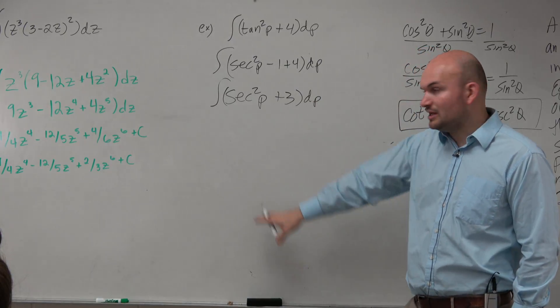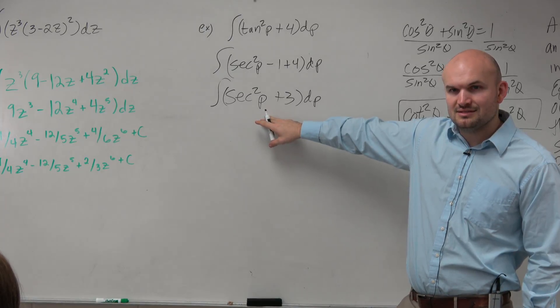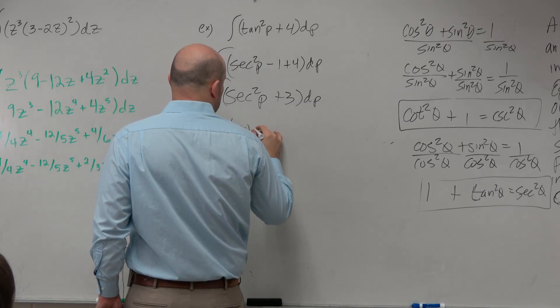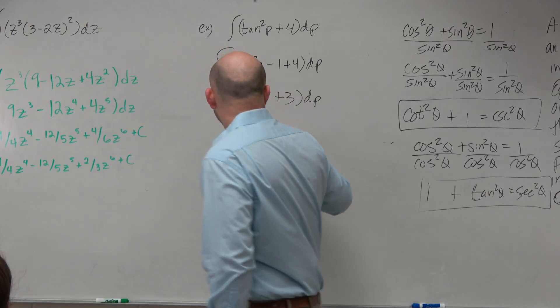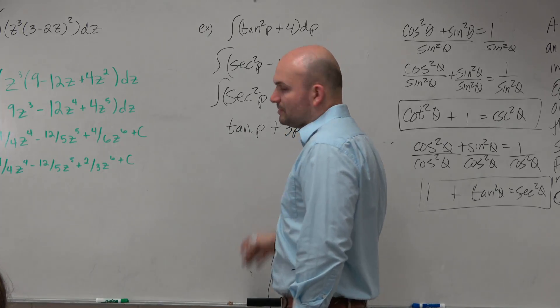And then now, by taking the integral, I look at, oh, I have secant squared. Anti-derivative of secant squared is tangent of p plus anti-derivative of 3p is going to be just 3p and then plus c.